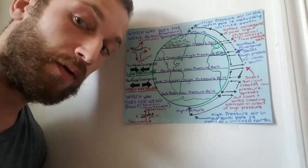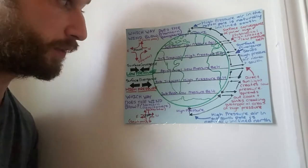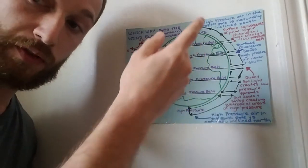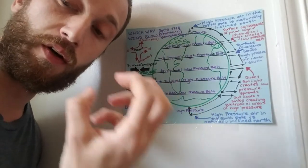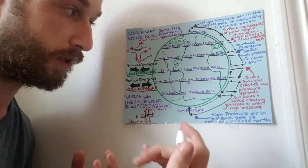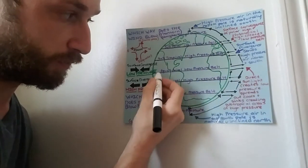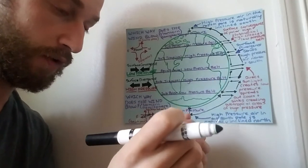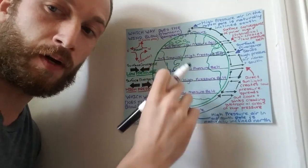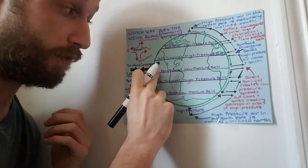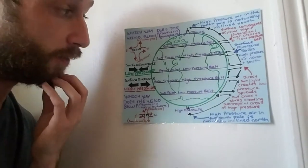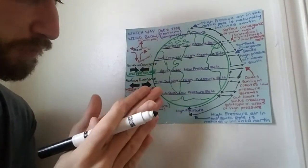Now you need to take everything just said and combine it with your understanding of the Coriolis effect. The Coriolis effect bends winds in different directions in the northern and southern hemisphere because of the rotation of the planet. This is why we have very predictable wind patterns. In the equatorial regions, these are areas of low pressure — converging winds just below and above the equatorial line create a region of very low wind, called the doldrums. There's almost no wind there.